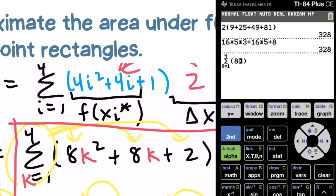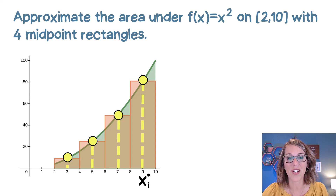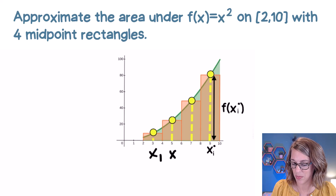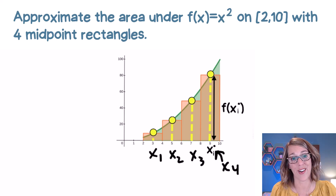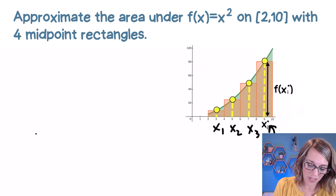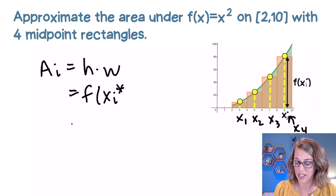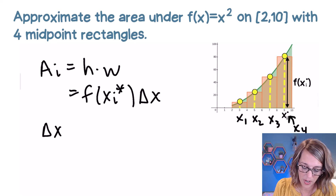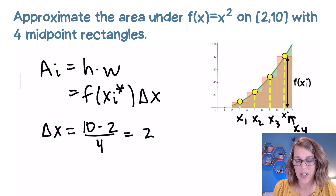Let's start by finding those areas. As I look at these midpoints, I'm measuring the height of each rectangle with the middlemost value. Our sample point x sub i star falls in the middle of each interval. With four rectangles, x sub 1 star equals 3, x sub 2 star equals 5, x sub 3 star equals 7, and x sub 4 star equals 9. The width delta x is (10 minus 2) divided by 4, which equals 2.